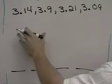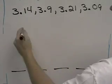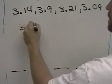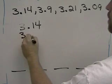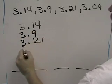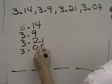So the first thing I'm going to do is I'm going to take these four numbers and I'm going to line them up by their decimals, 3.14, 3.9, 3.21, and 3.09.